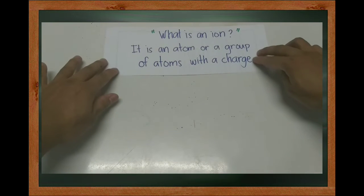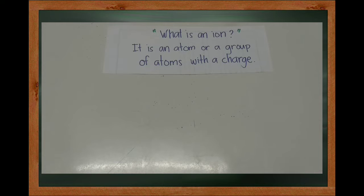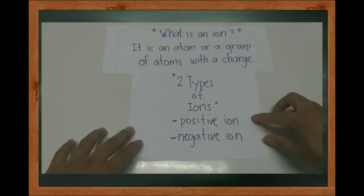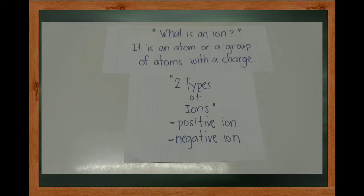Now that you know how to find proton, neutron, and electron numbers of an atom, let's jump in on finding those numbers for an ion. An ion is an atom or a group of atoms with a charge. There are two types of ion: positive ion and negative ion. An atom loses electrons to become a positive ion, and gains electrons to become a negative ion.